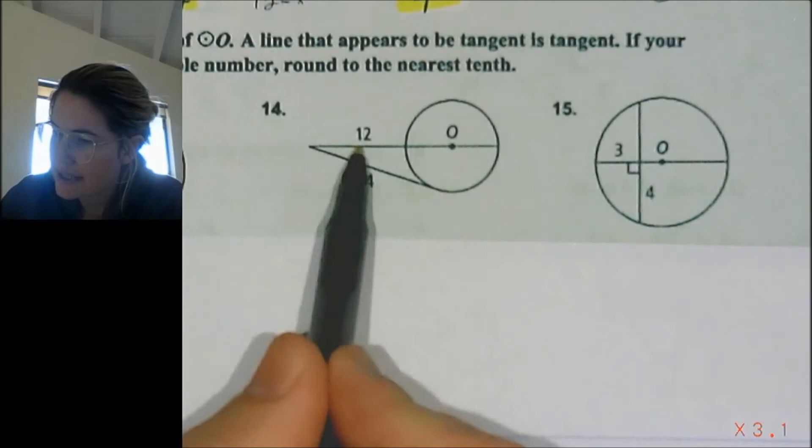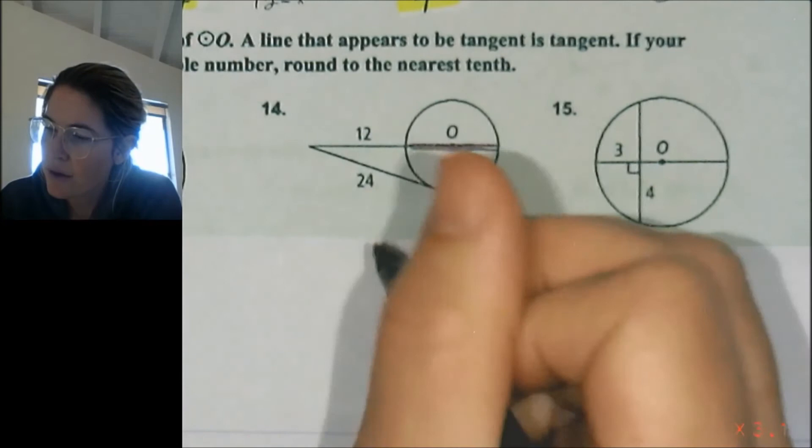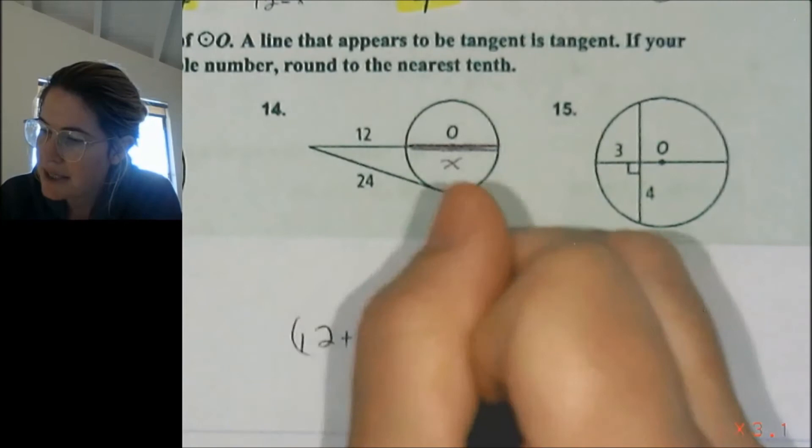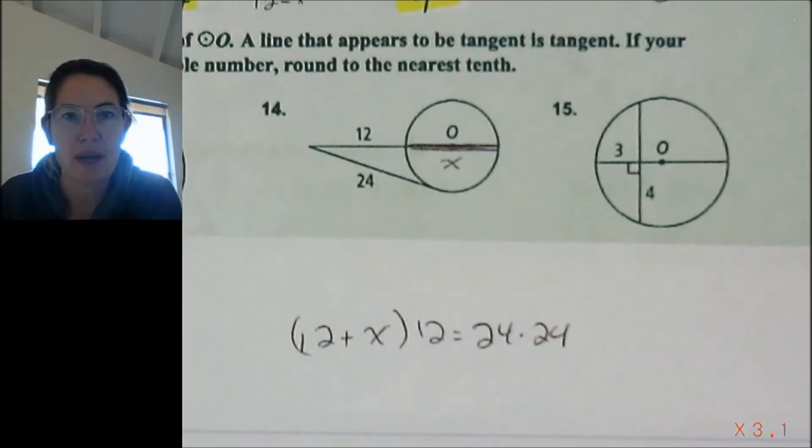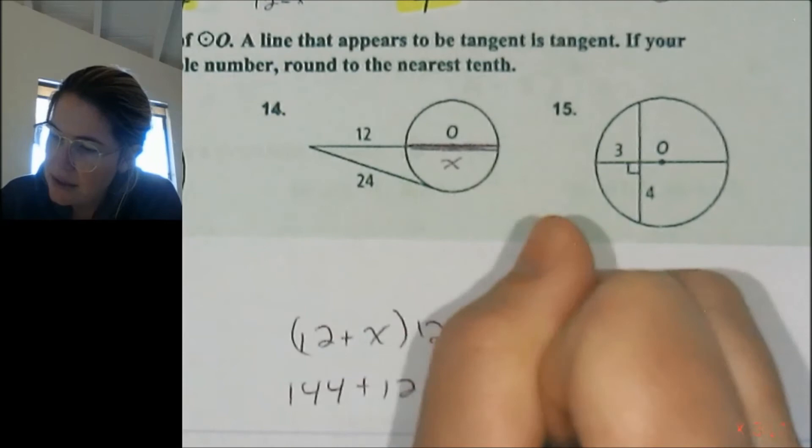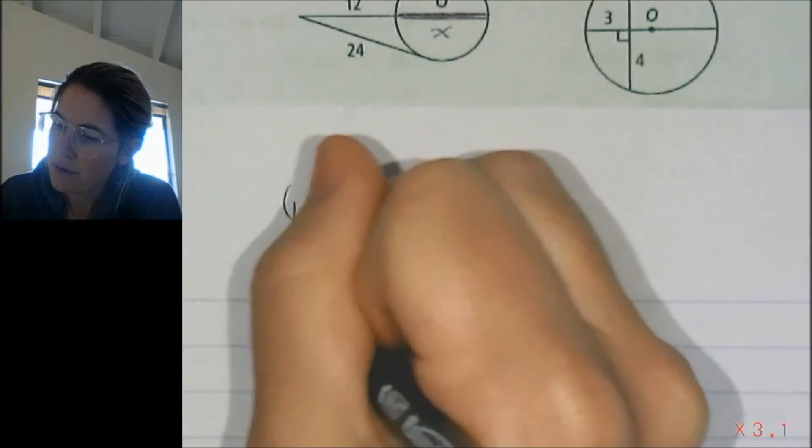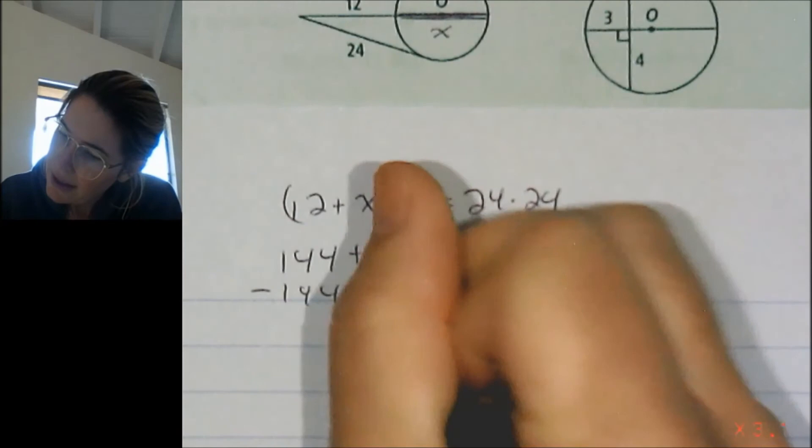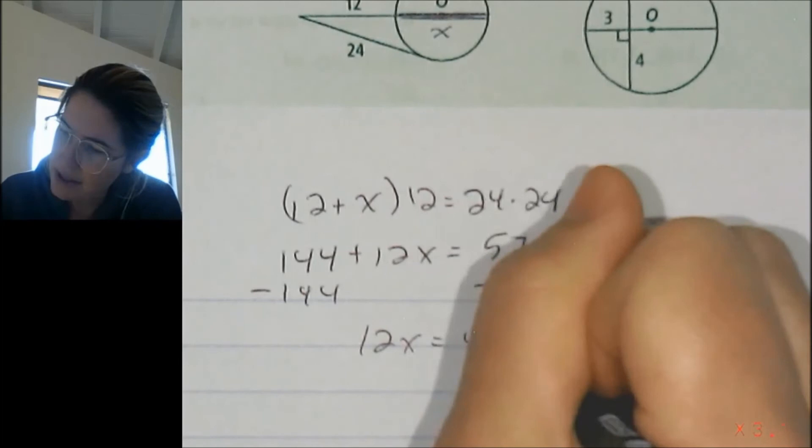All right, on number 14 we've got these guys intersecting outside. So we're going to use that whole secant segment times external secant segment thing. I don't know what this part is, so I'm going to say x. All right, so the whole secant segment is 12 plus x times the external secant segment is 12 equals the whole tangent segment, 24, times the external tangent segment, 24. All right, and now we're just going to distribute. So we get 144 plus 12x equals 24 times 24 is 576. We're going to minus 144 from both sides. And we get 12x equals 432. Divide by 12, and our little chunk is equal to 36.